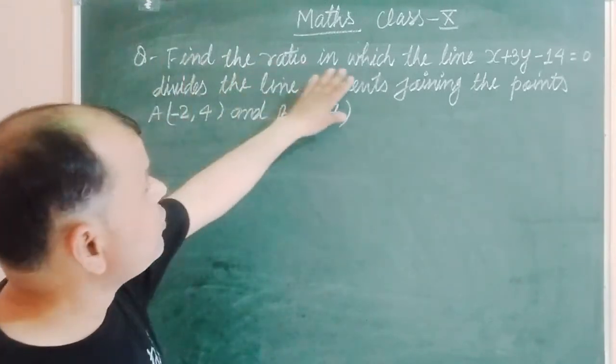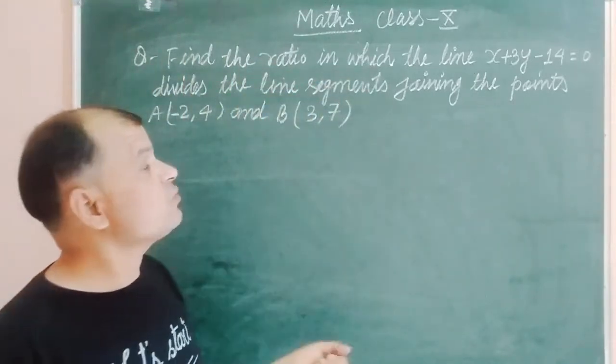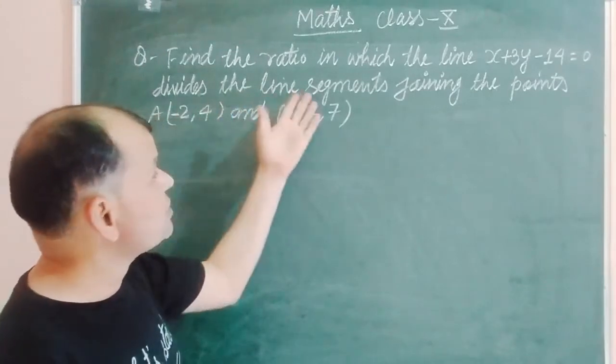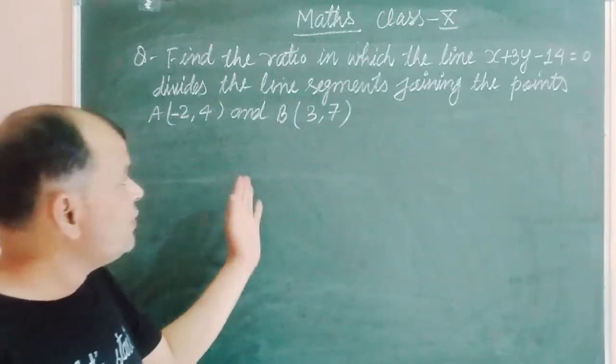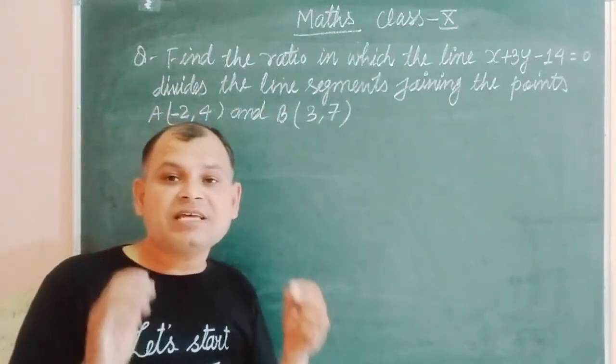So question is, find the ratio in which the line x plus 3y minus 14 equals 0 divides the line segment joining the points A(-2, 4) and B(3, 7).